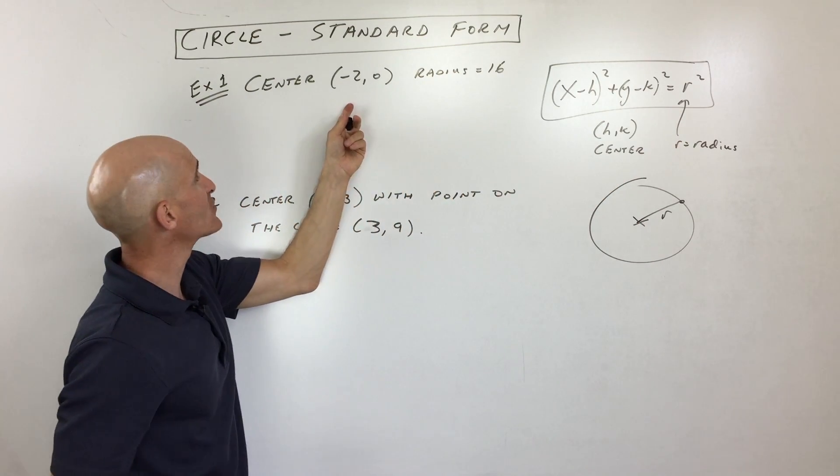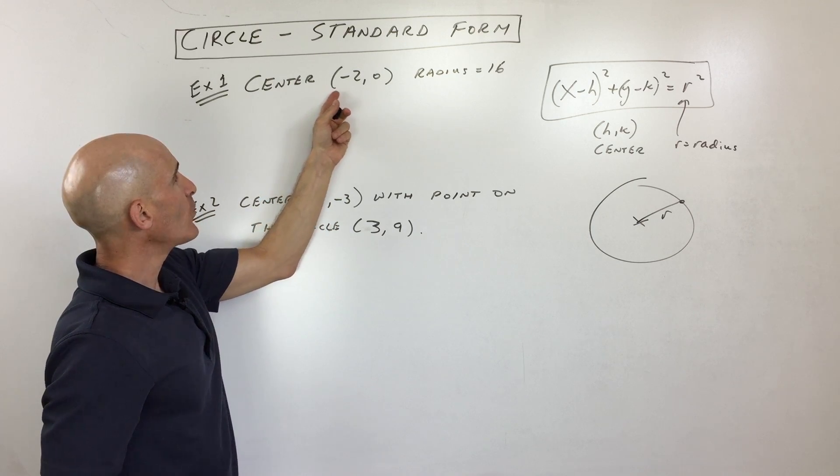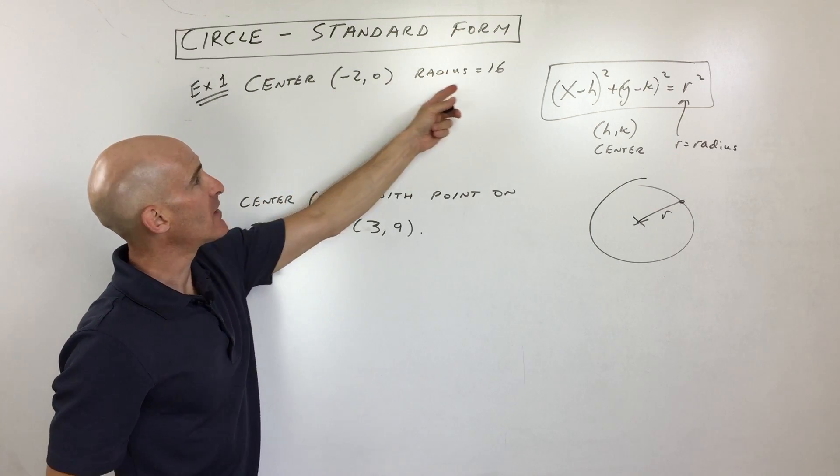So let's do two examples and I'll show you how this works. Example number one: we have the center at negative two, zero, and the radius is 16.